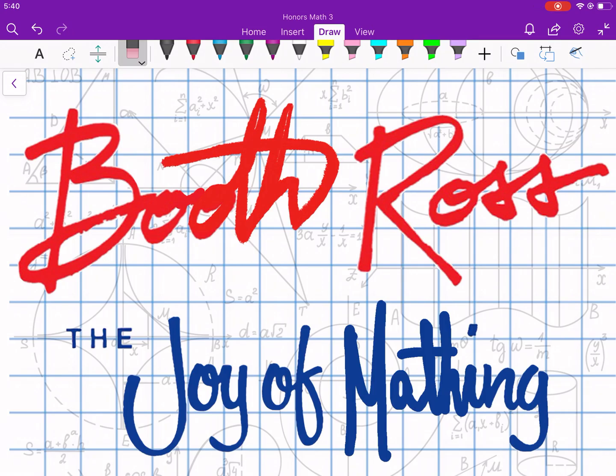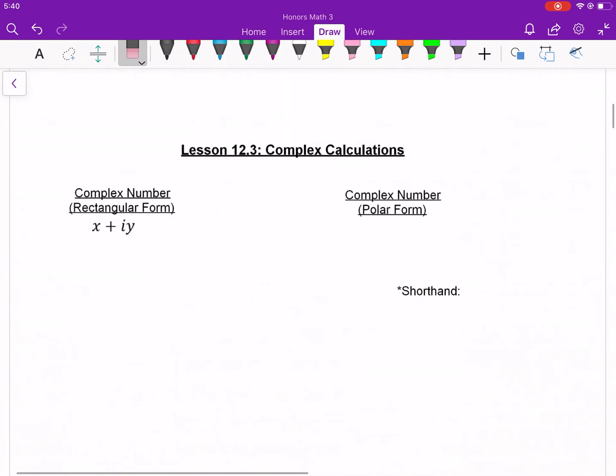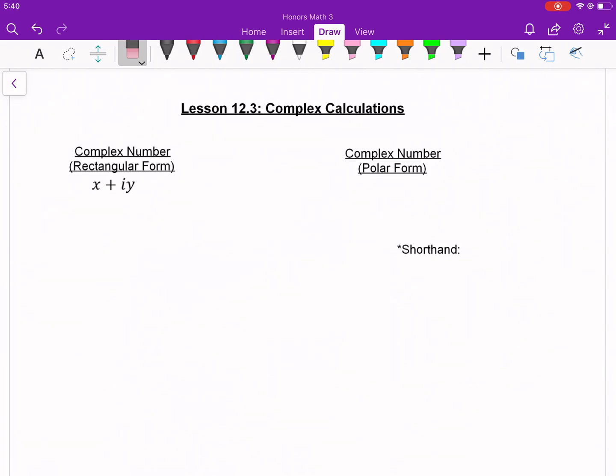All right, welcome to another episode of Booth Ross and the Joy of Mathing. Episode 12.3, we are doing complex calculations, which sounds really complex. That was a knee slapper. So we're going to go ahead and talk about converting first between the two forms, which we actually did in 12.1, so this shouldn't be too hard.